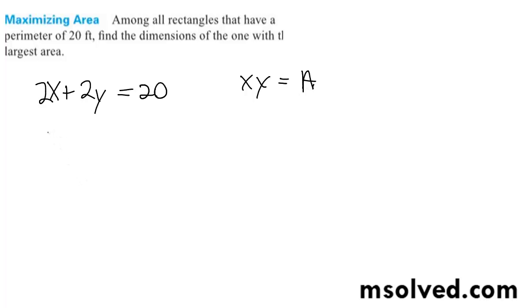So here we'll substitute to find y in terms of x. We've got 2y equals 20 minus 2x.